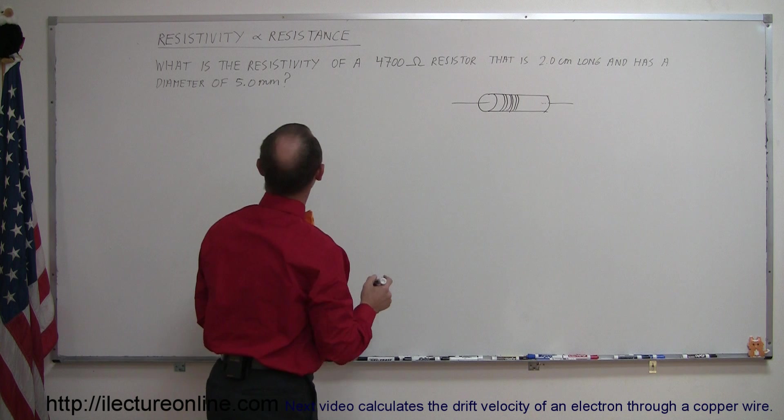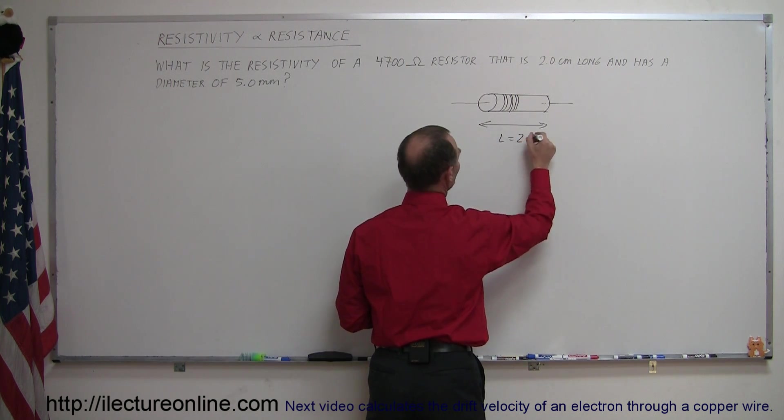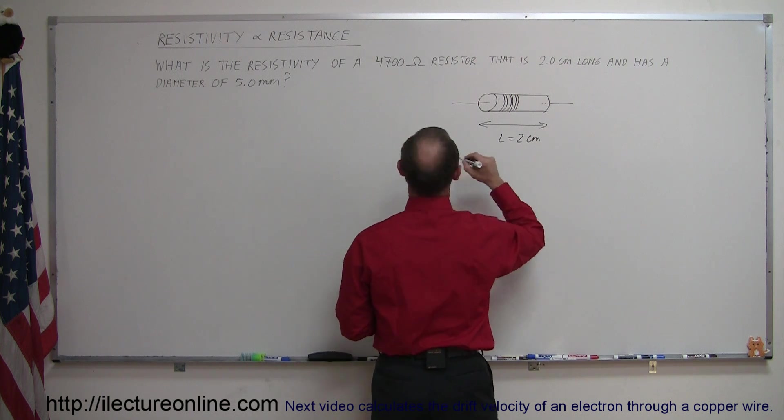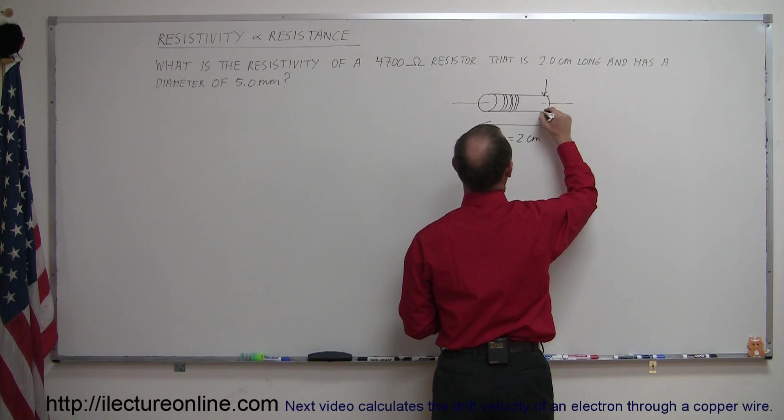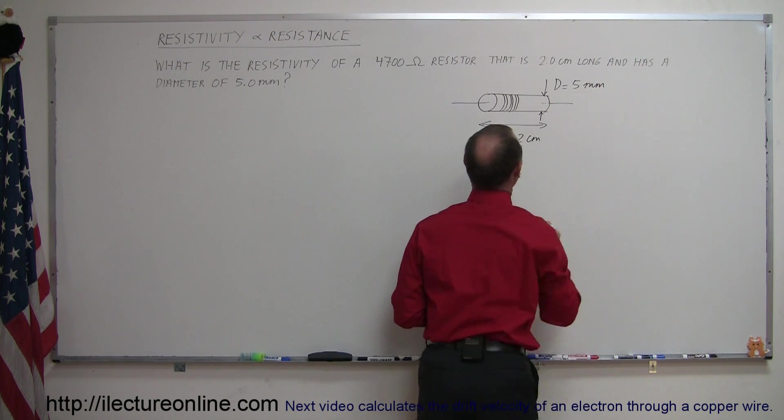And let's say that the length of that resistor is 2 centimeters. So this length L equals 2 centimeters, and then it says we have a diameter D equal to 5 millimeters.